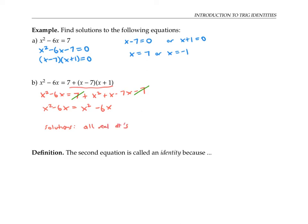The second equation is called an identity, because it holds for all values of the variable. The first equation, on the other hand, is not an identity, because it only holds for some values of x, and not all values.